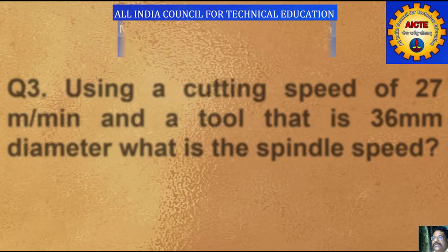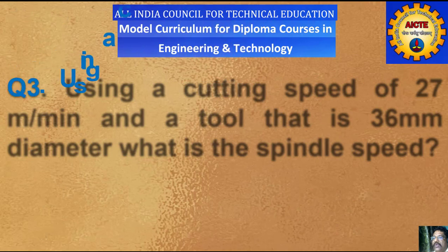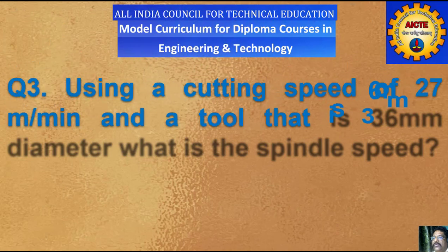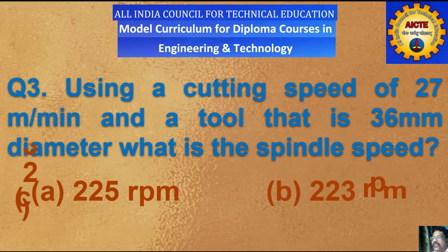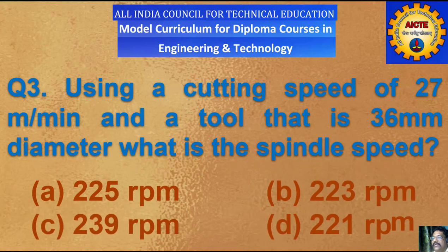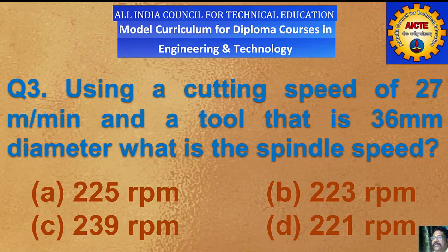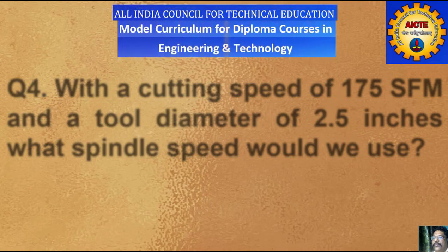Question number 3: using a cutting speed of 27 m per minute and a tool that is 36 mm diameter, what is the spindle speed? A) 225 rpm, B) 223 rpm, C) 239 rpm, D) 221 rpm.